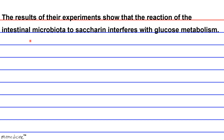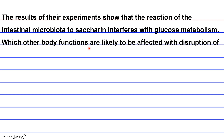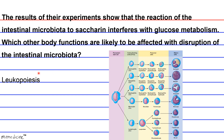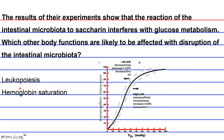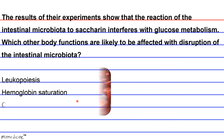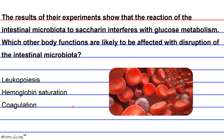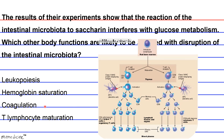The results show that the reaction of the intestinal microbiota to saccharin interferes with glucose metabolism. Which other body functions are likely to be affected by disruption of intestinal microbiota? Is it A: leukopoiesis, B: hemoglobin saturation, C: coagulation, or D: T lymphocyte maturation?